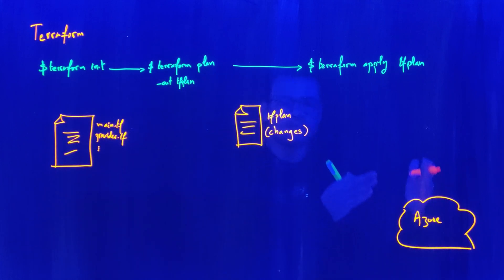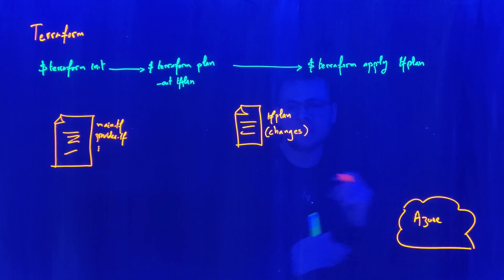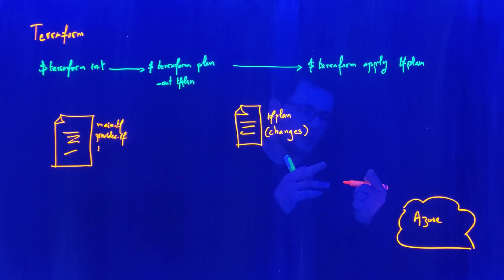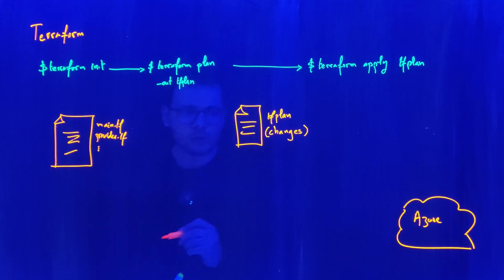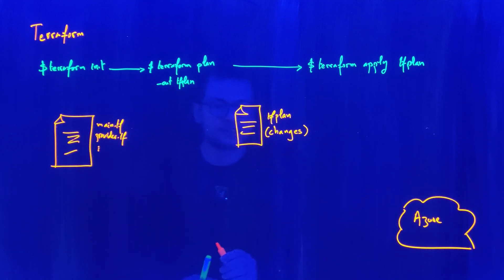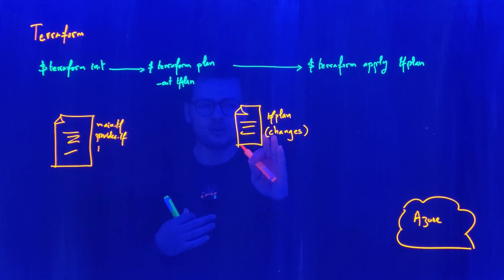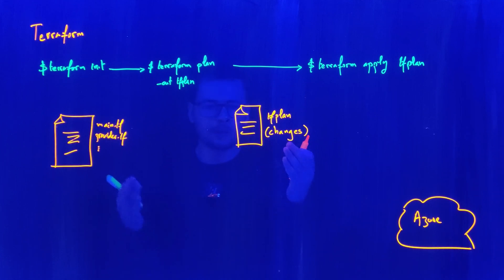For example, if you have a virtual network with one subnet and then you add a second subnet, then in the next deployment, Terraform will go to deploy only that second subnet — because the existing infrastructure is already deployed. So the tf plan contains only the changes. But the question is, how are those changes determined?